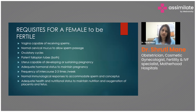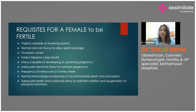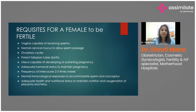The female must have ovulatory cycles — regular menstrual cycles with evidence of ovulation. Patent fallopian tubes are also necessary; both fallopian tubes should be open. This can be tested via HSG (hysterosalpingography) or SIS (saline infusion sonography).